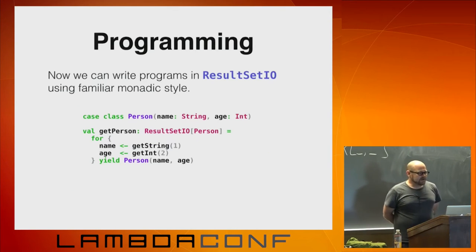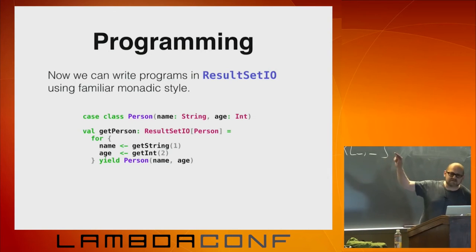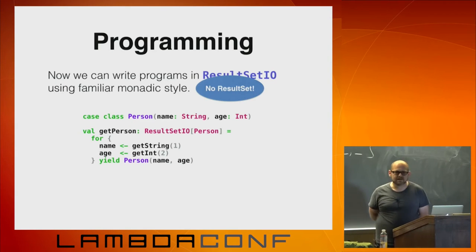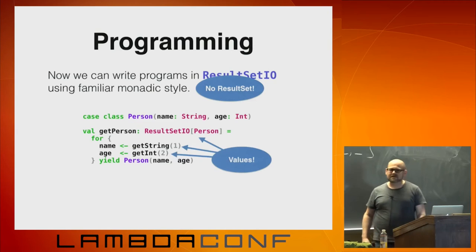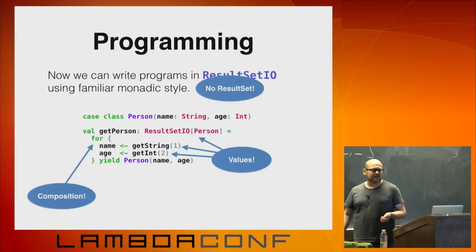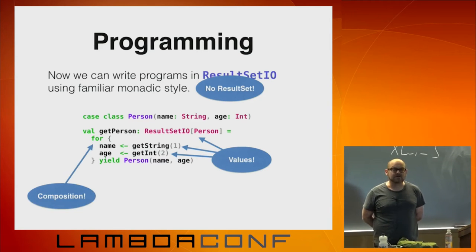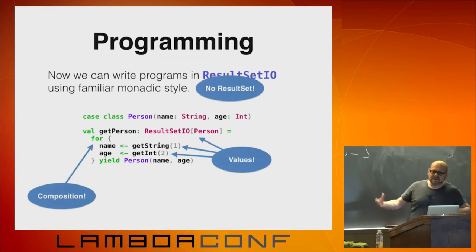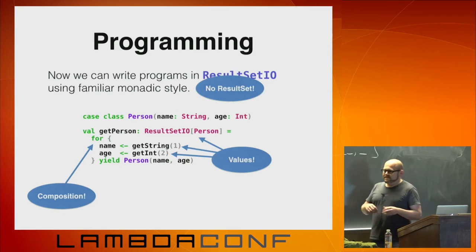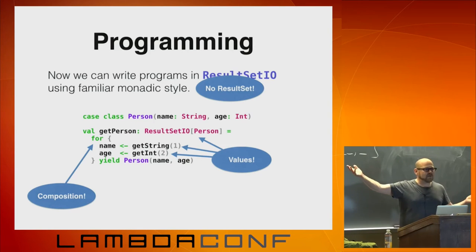Now we can write this program: for name taken from getString, age taken from getInt, yield a new person. I claim this is better than the program we saw before because there's no result set — there's nothing to leak. The user writing this can't observe the result set. All of these things are just values; all we're doing is constructing data. There are no side effects — these are all pure values. Now we're composing stuff: we've got two little programs and we're putting them together to make a third, larger program. Notice the surface complexity is the same — it's just a ResultSetIO of something. We've composed two small things and got something back with the same shape. This is what we want from composition.